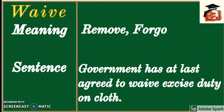Now let's look at 'waive' — W-A-I-V-E — which means to remove, forgo, or cancel something. Example: 'Government has at least agreed to waive excise duty on cloth.' This sentence is in present perfect tense and means that the government has removed excise duty on cloth.